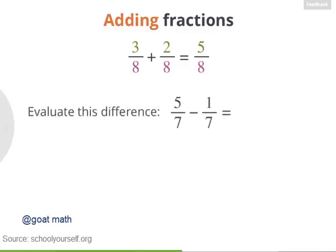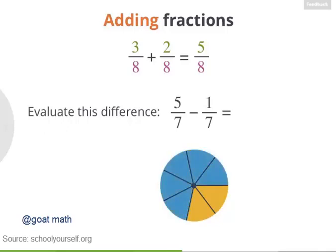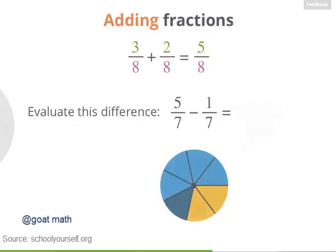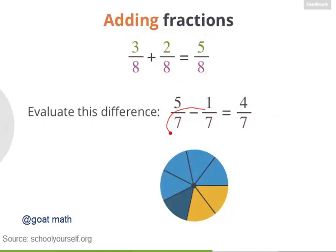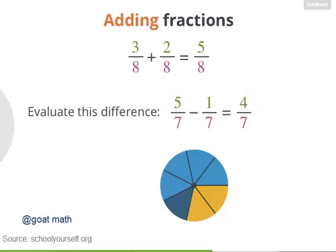Next, let's look at subtracting fractions. For example, what's 5 sevenths minus 1 seventh? Here's a dot divided into 7 equal pieces. Let's shade in 5 of them, giving us 5 sevenths. And then we're subtracting or removing 1 seventh. Right. This equals 4 sevenths. Just like addition, when you're subtracting fractions with the same denominator, that's the denominator in your answer. And you can subtract the numerator: 5 minus 1 equals 4.